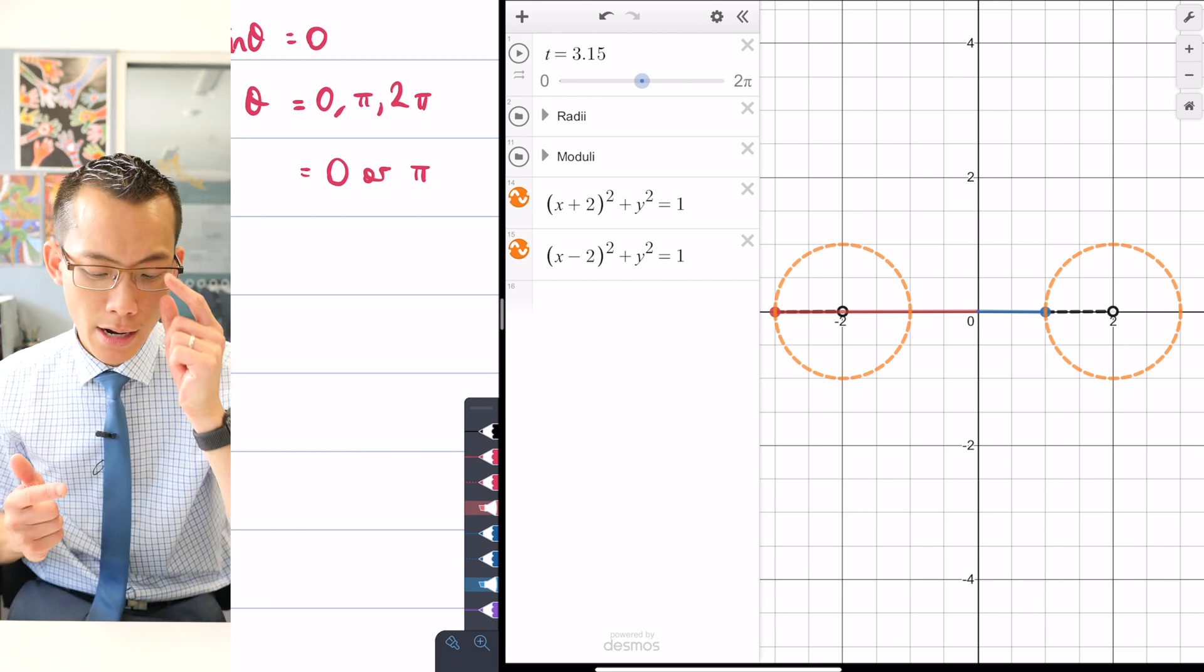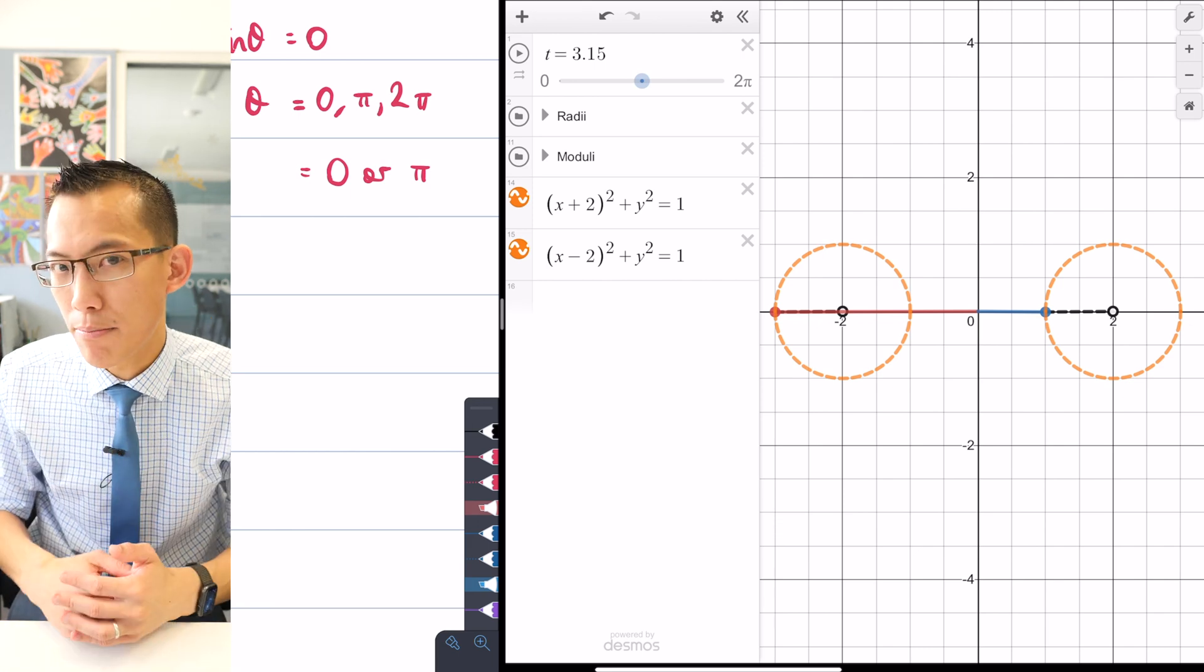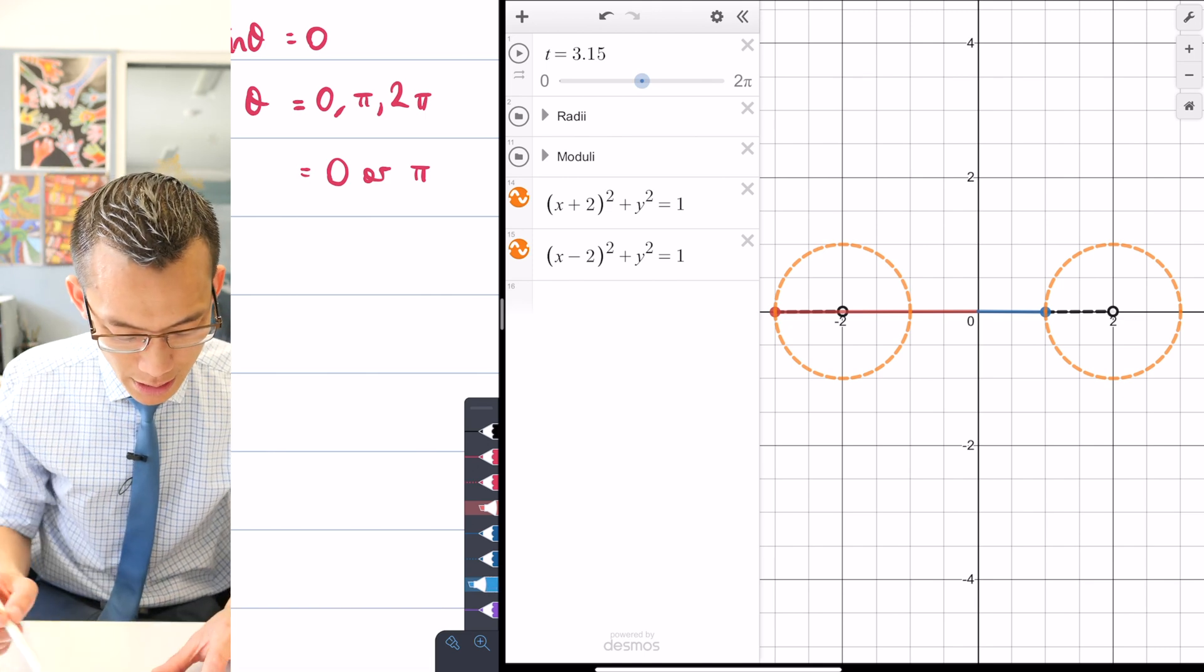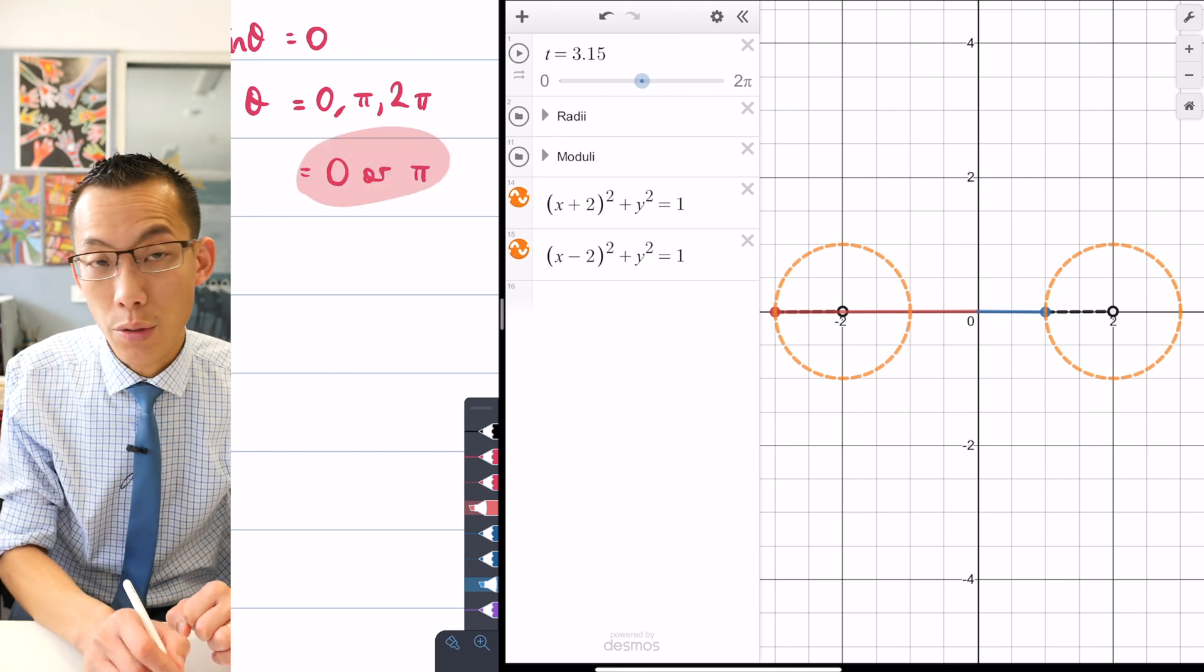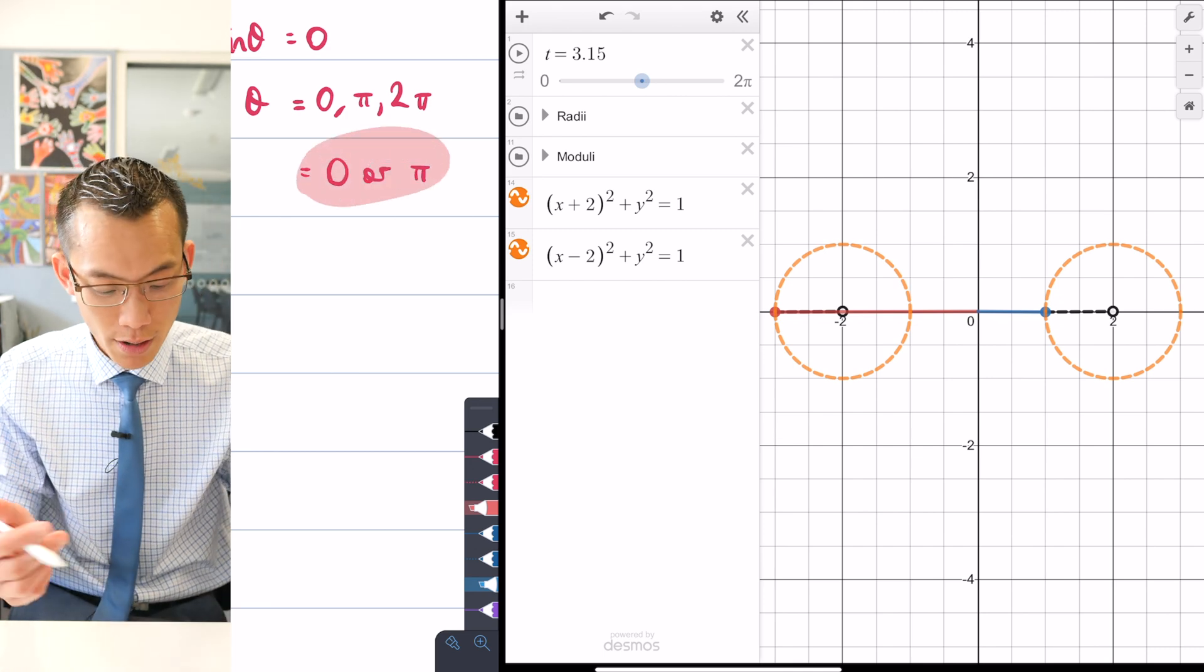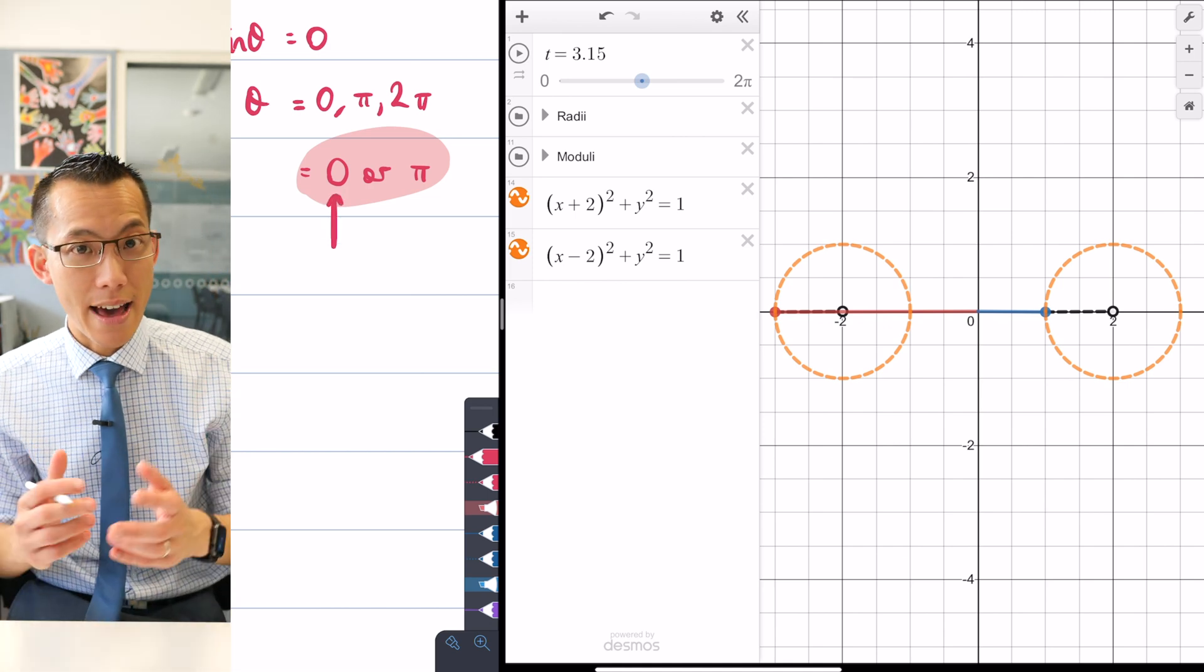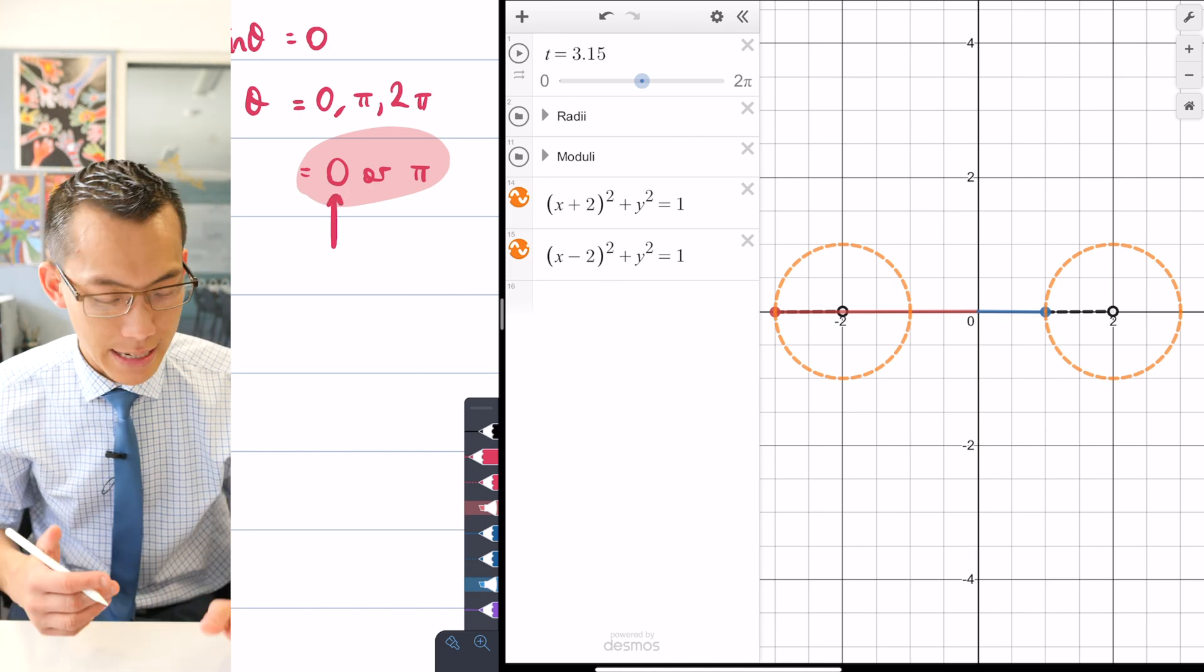So therefore I can say over here that these two results, these two results are actually equivalent to each other. So I just need to take one of them, like say 0, and consider that as the important one. Then I can test out.